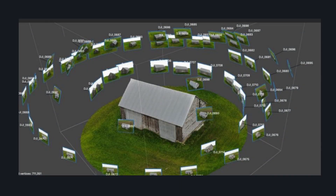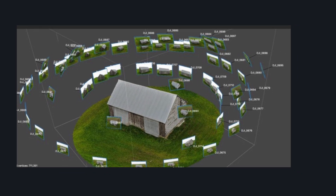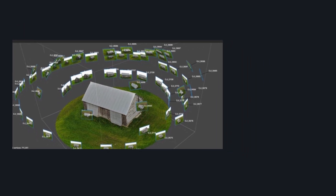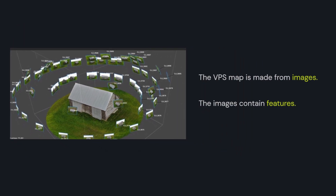The VPS map is built from images. The images consist of features. Capturing features well results in a successful map.